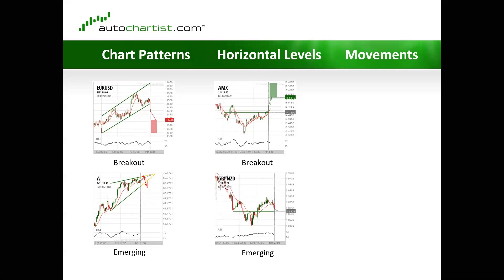The same thing applies in this example on GBP/NZD. This is a horizontal level made up of only one line — just a support line in this case. Autochartist did a good job identifying this pattern. It consolidated here, here and here. There was a breakout, and now it's moving back towards this level — but no breakout yet.